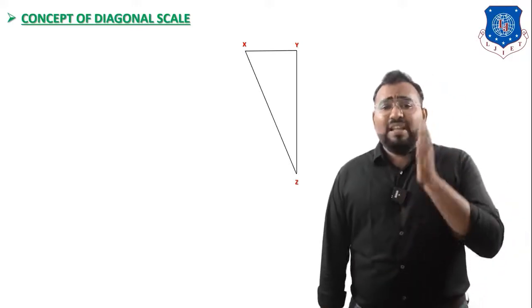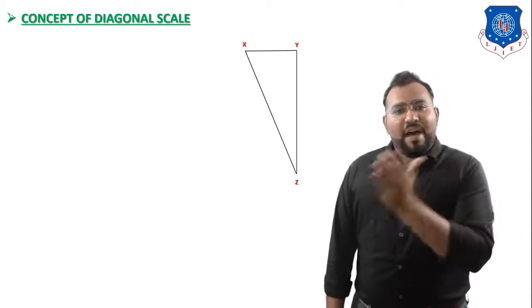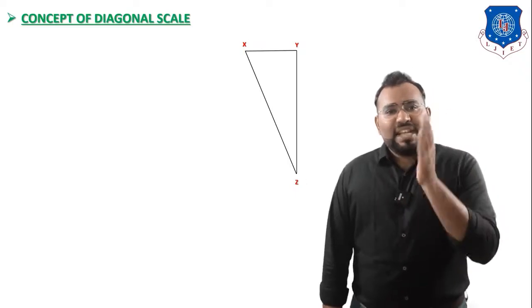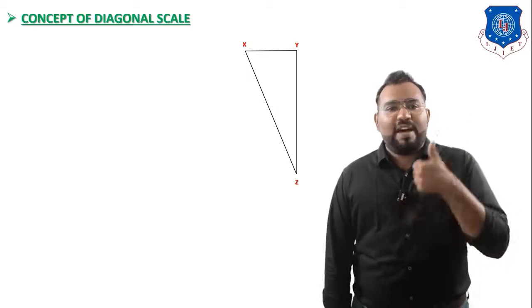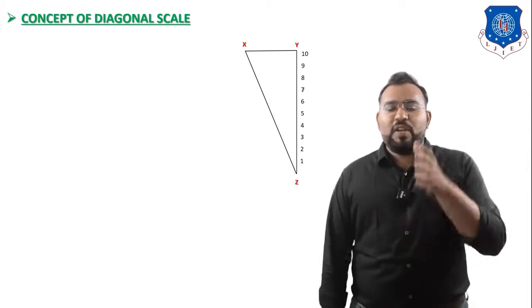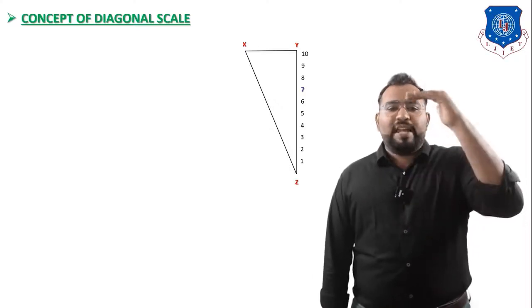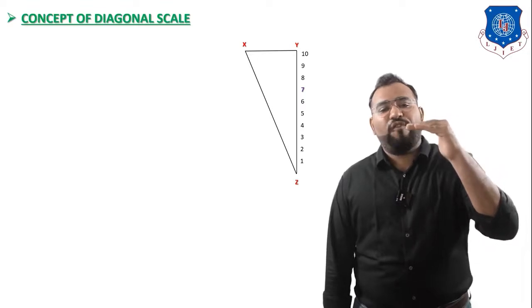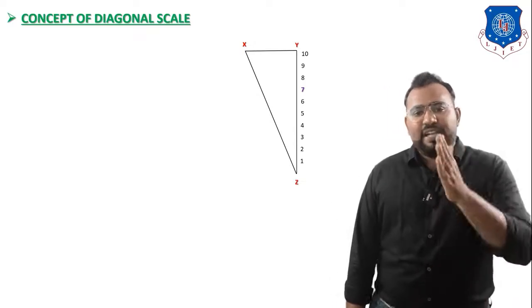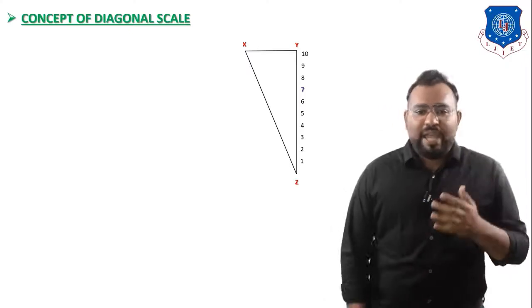We now have triangle XYZ. We divide vertical line YZ into 10 parts, labeled from Y as 10, 9, 8, 7, 6, 5, 4, 3, 2, 1 — each division representing 1 mm. So there are 10 divisions of vertical line YZ, each representing 1 mm.